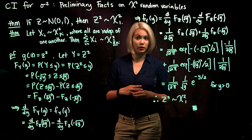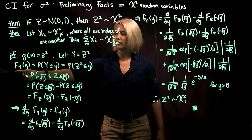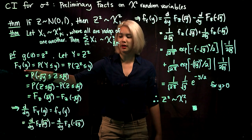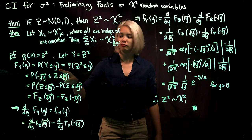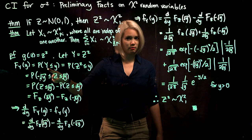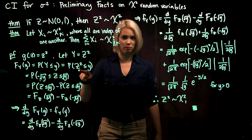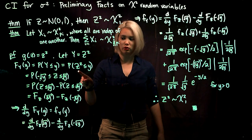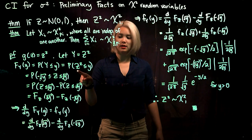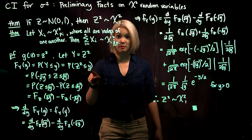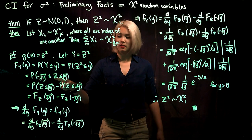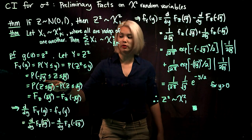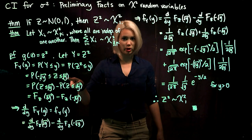Let's start with the CDF for Y. That's just the probability that Y is less than or equal to some value little y. But capital Y is Z squared, where Z is a standard normal random variable, so we make that substitution. If Z squared is less than or equal to y, then Z must be between negative square root of y and positive square root of y.